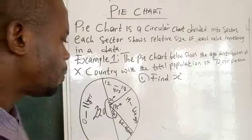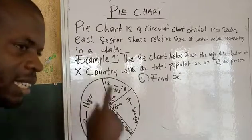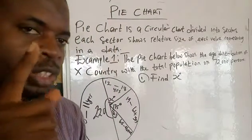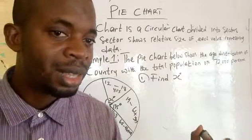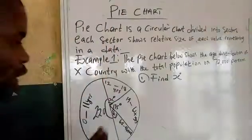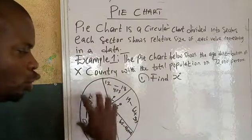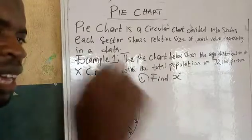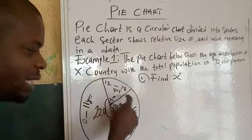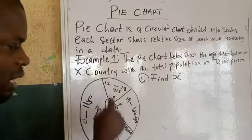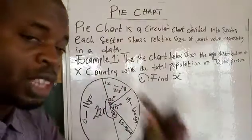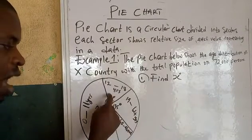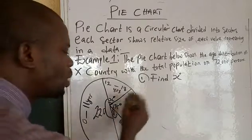How do you find the x degree? It is very simple. What is the sum of angles at a point? 360 degrees — correct. So the summation of all sectors in a circle must equal 360 degrees. That is what you must know. Whether you have 10 sectors or 40 sectors, everything together must give you 360 degrees.